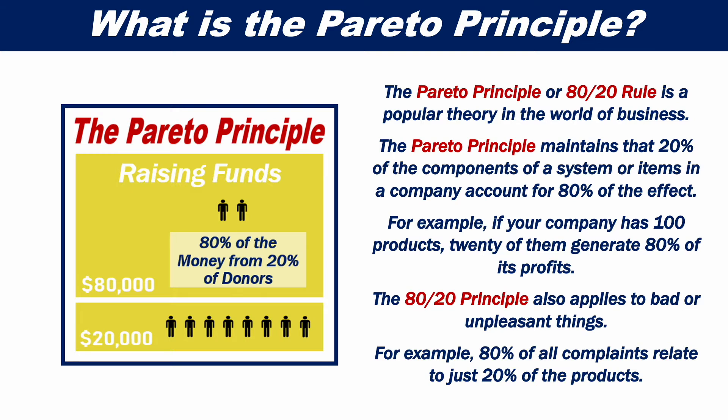For example, if your company has 100 products, 20 of them generate 80% of its profits. The 80-20 principle also applies to bad or unpleasant things. For example, 80% of all complaints relate to just 20% of the products.